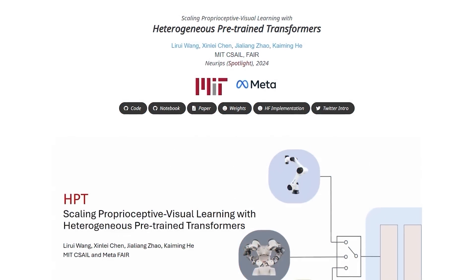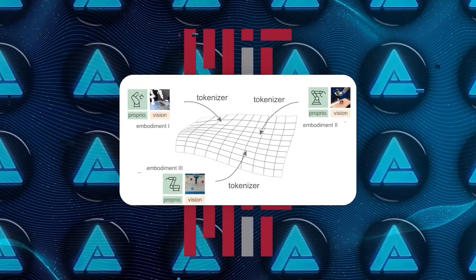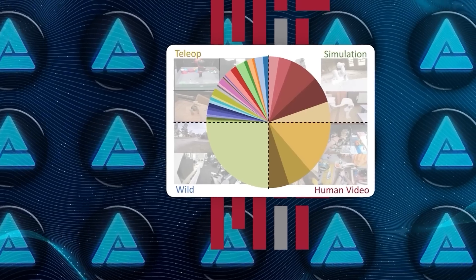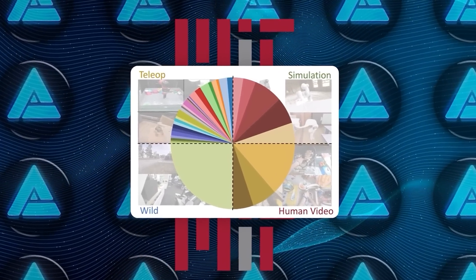They've named this system Heterogeneous Pre-trained Transformers, or HPT for short. Here's what makes it so cool. It unifies all these different types of robotic data, whether it's camera visuals, sensor signals, or even human-guided demo videos, into a single system.